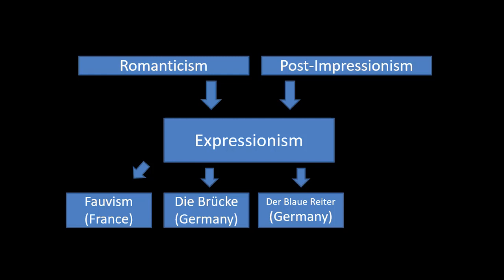For example, here we're looking at expressionist art and we see that it has three regional subsets which in this lecture we're going to be investigating further. Technically there are four, but we will not be going over Viennese Expressionism in this lecture.